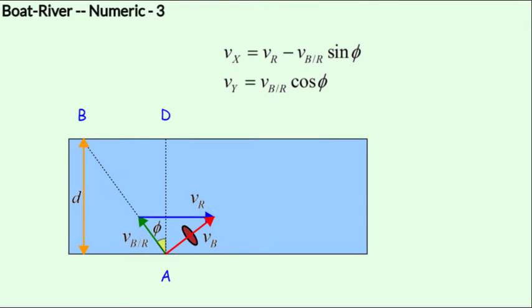We begin solving with the same principles as we had in the previous lessons. We begin by obtaining the components of the velocity vb in the x and y directions. In the x direction, the velocity will be vr minus vb with respect to r sine of phi, and in the y direction, the velocity will be vb with respect to r cos of phi.